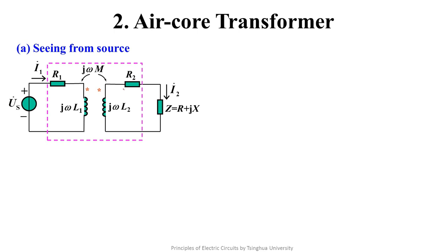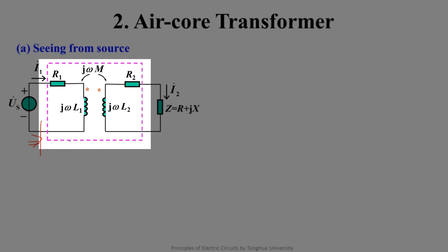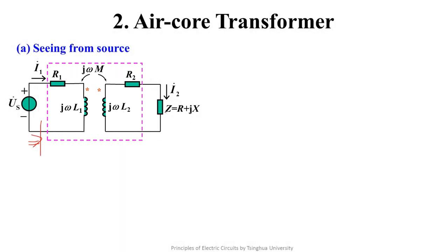We begin to analyze the air core transformer from three different aspects. First, we look from the power supply — that is, what equivalent circuit is seen looking from the source to the right. The dotted box in the figure is the electrical model of the transformer, where R1 and R2 are the parasitic resistances of the two coils, L1 is the self-inductance of coil 1, L2 is the self-inductance of coil 2, M is the mutual inductance, and Z = R + jX is the impedance of the load.